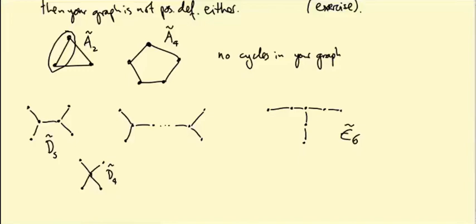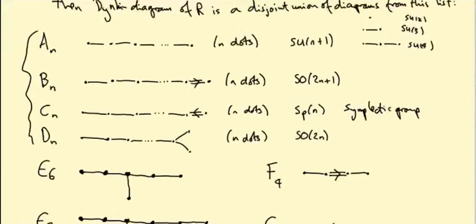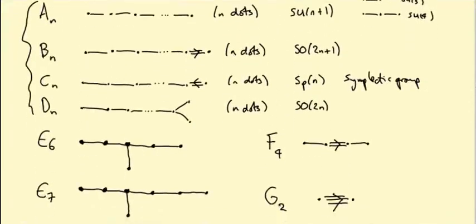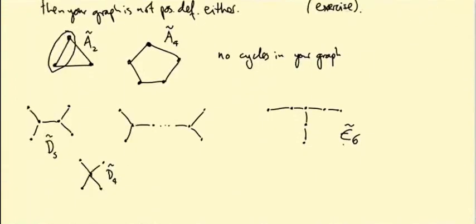And then you observe that any graph that's not on our list has to contain one of these subgraphs. So these are the only graphs that don't contain an An tilde, a Dn tilde, an En tilde, an Fn tilde, a G2 tilde, Bn tilde or Cn tilde. Okay. So one of the possible in-depth projects, if you still haven't done one is to complete the proof of this. It's actually a really nice piece of sort of combinatorics that I've only really sketched here. Okay.